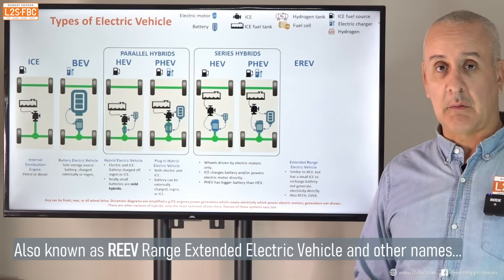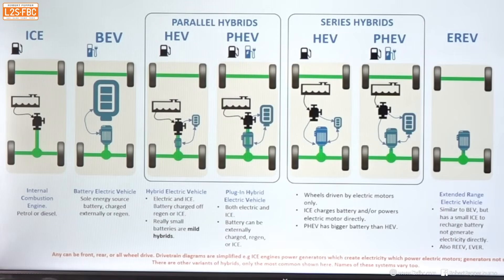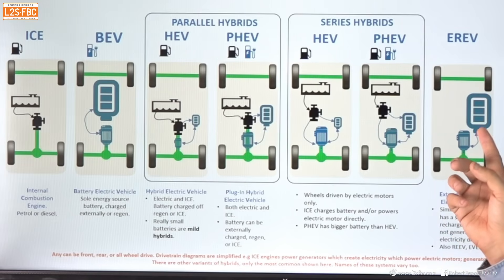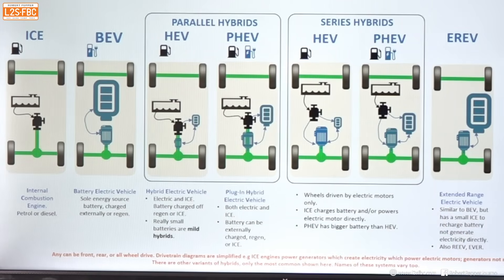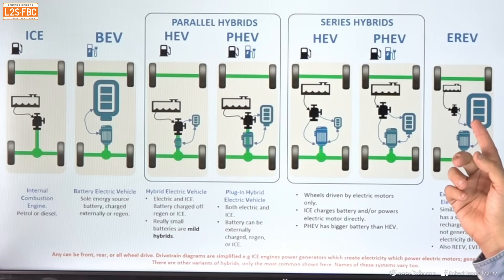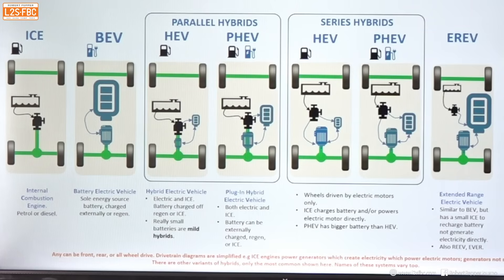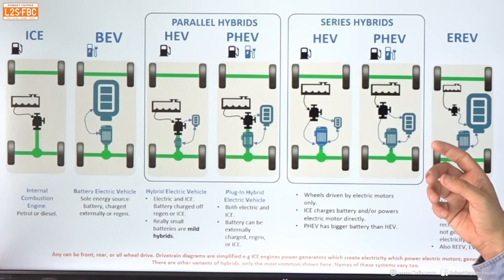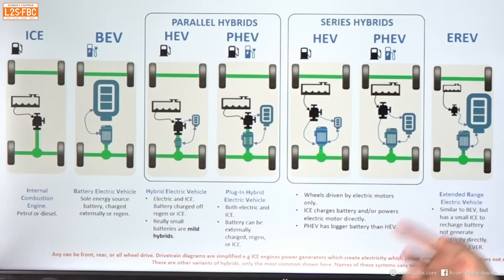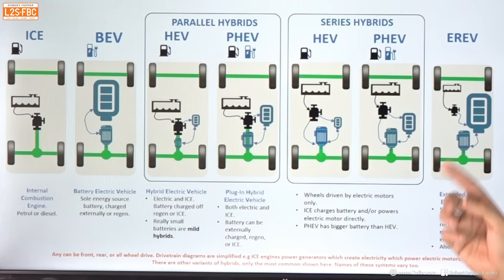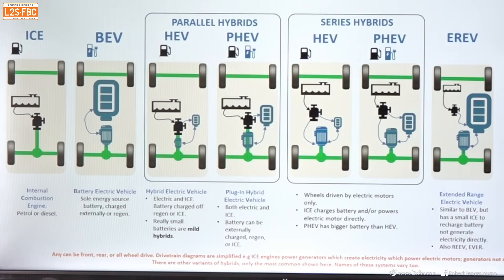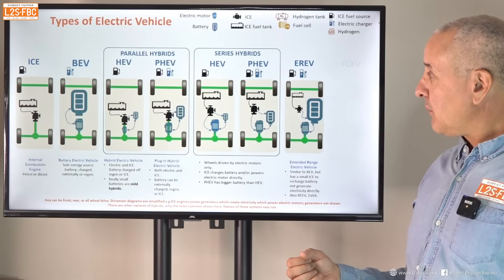Then there's the EREV — extended range electric vehicle. It has a large electric motor and a large battery, similar in size to a BEV's battery, but adds a tiny ICE engine with a small fuel tank. The key difference is that the ICE can only charge the battery; it cannot drive the wheels or directly power the motor. It's essentially a BEV carrying an onboard generator.